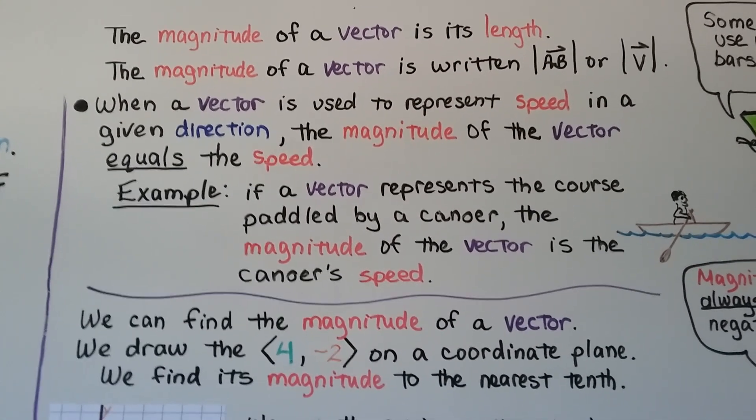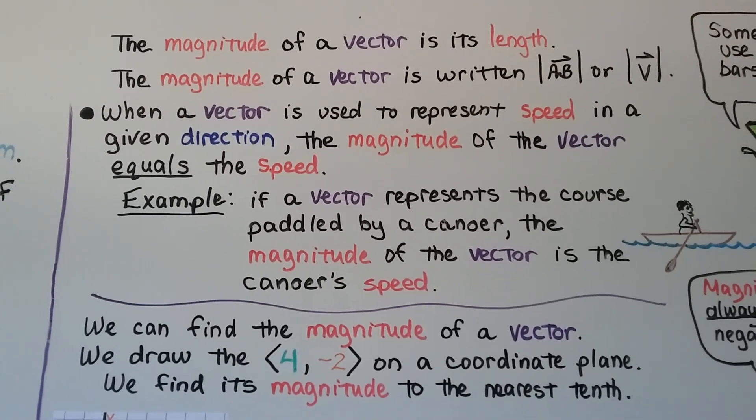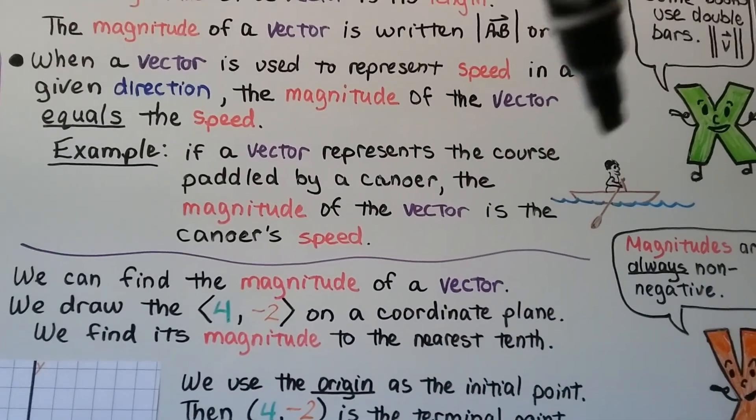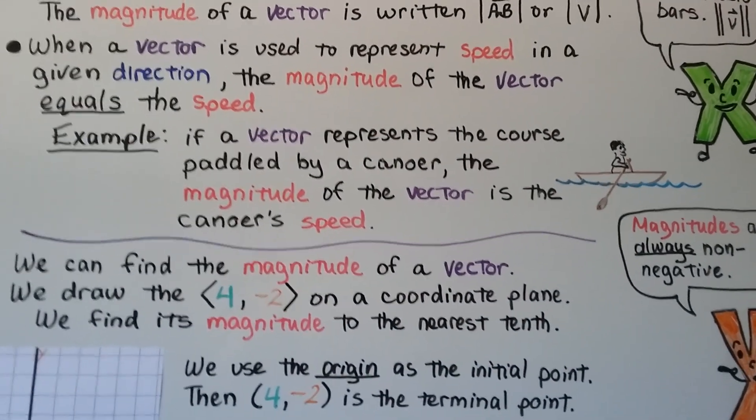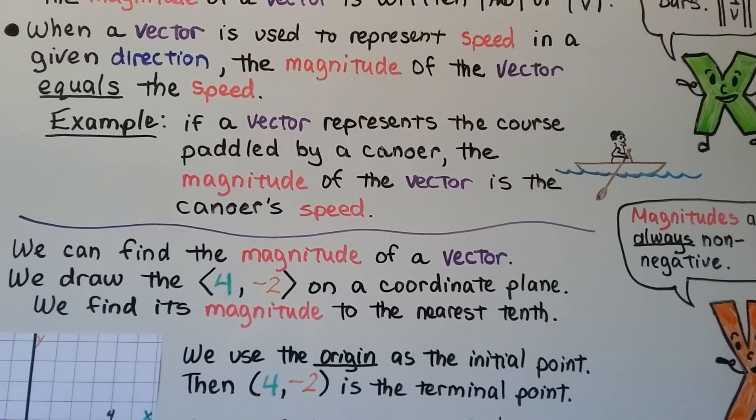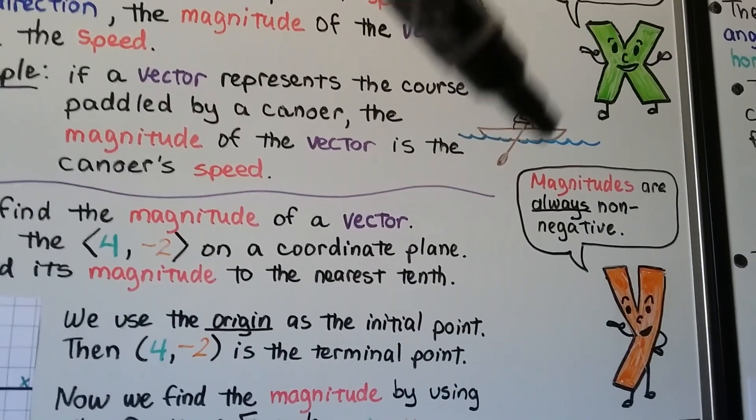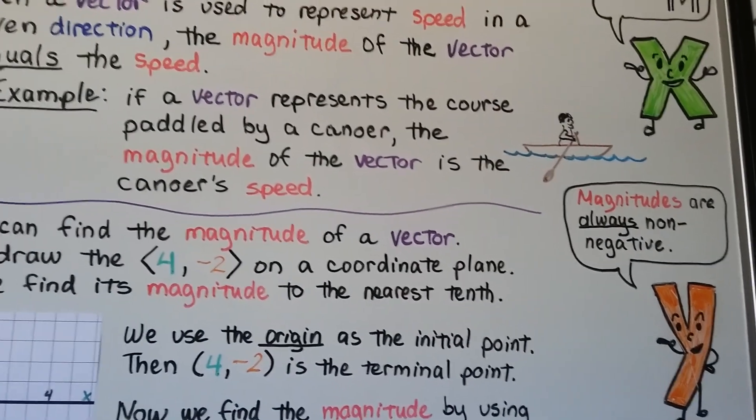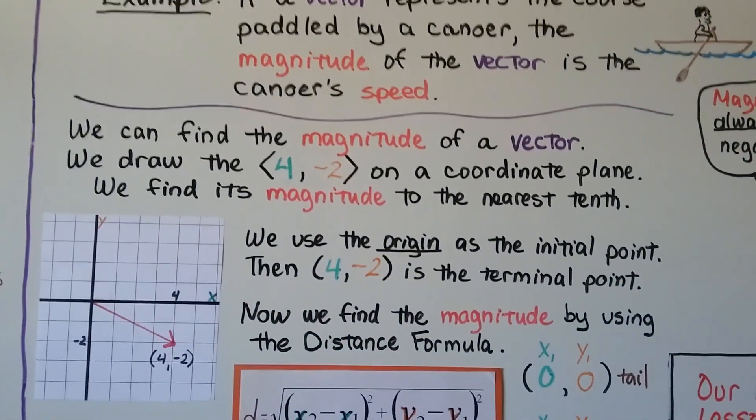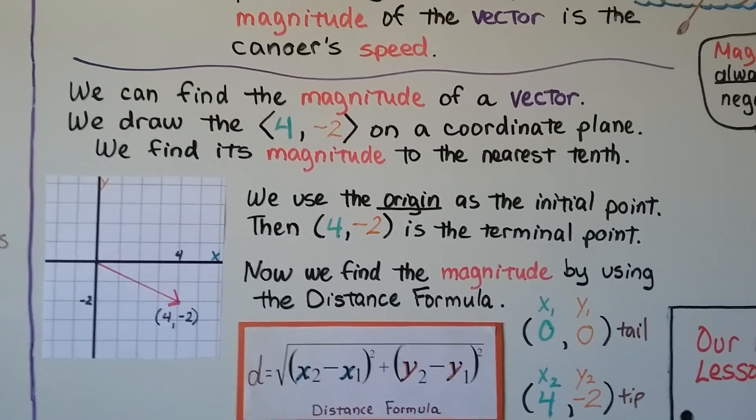When a vector is used to represent speed in a given direction, the magnitude of the vector equals the speed. So, for example, if a vector represents the course paddled by a canoer, the magnitude of the vector is the canoer's speed. It's how fast he's going in that direction. And magnitudes are always non-negative because we're talking about a speed. You can't go negative speed. Even if you're going backwards, you're still going a certain speed.